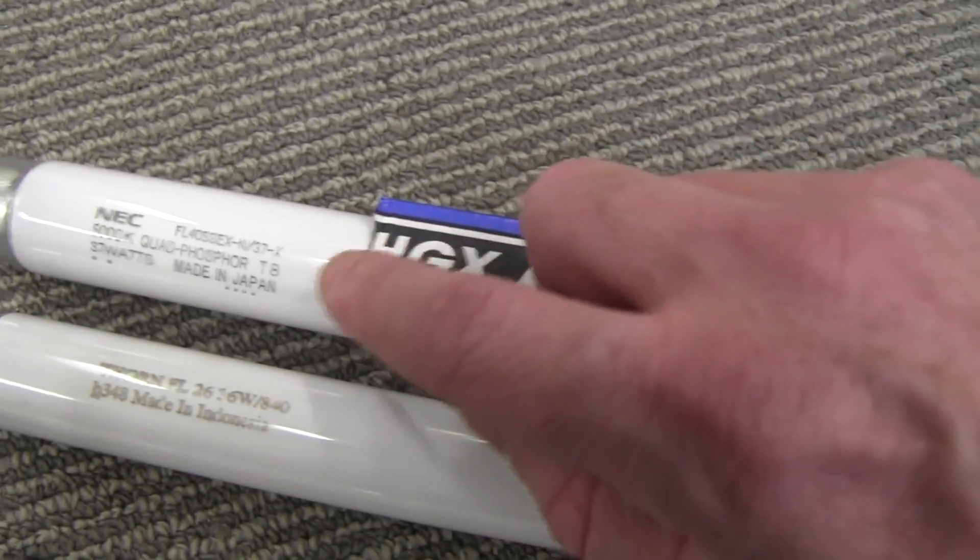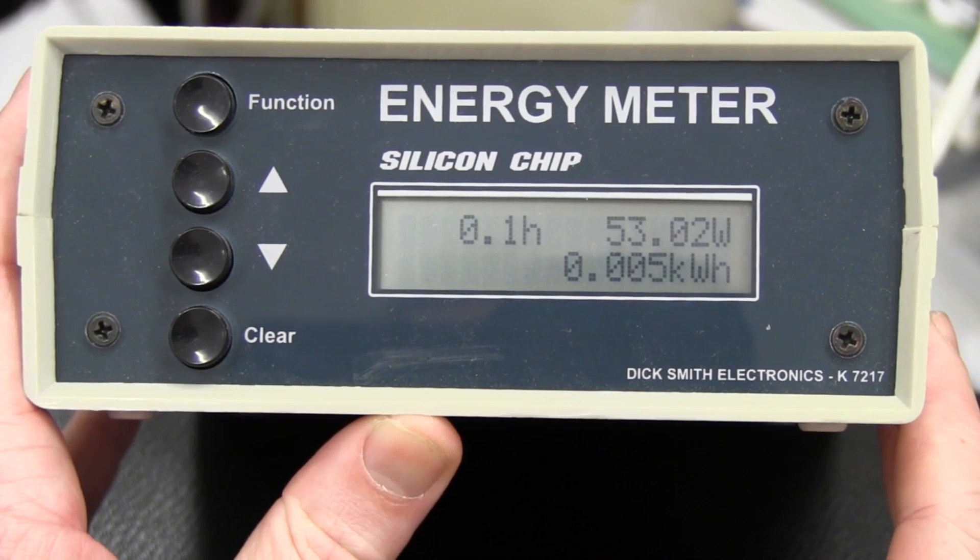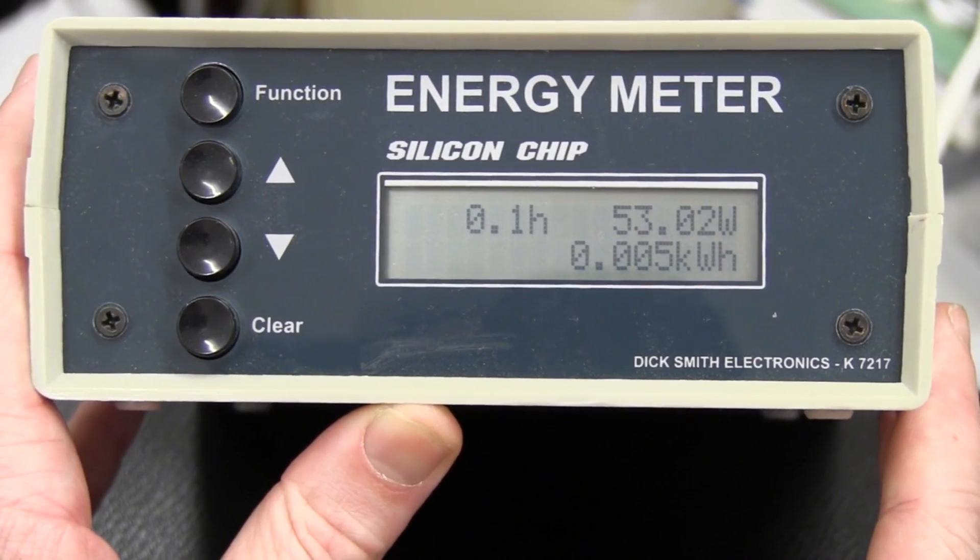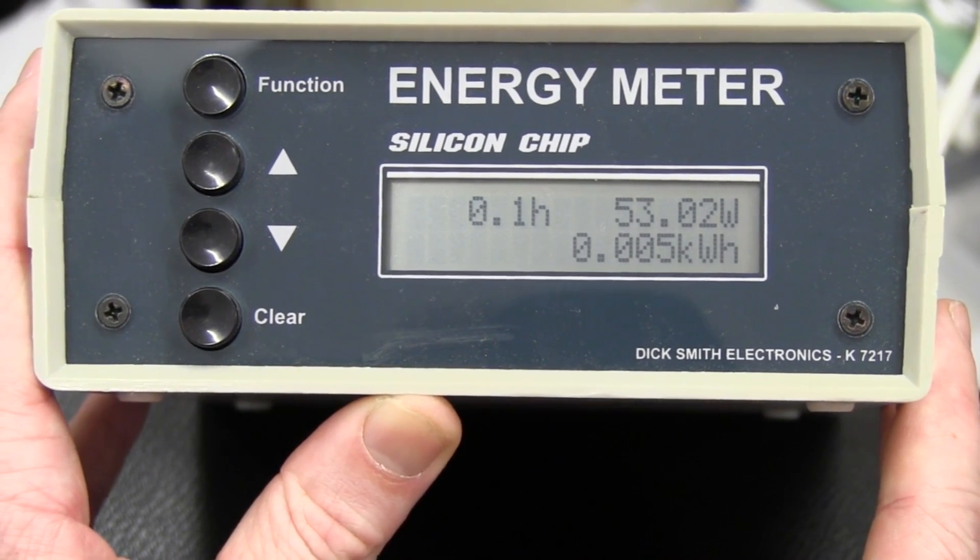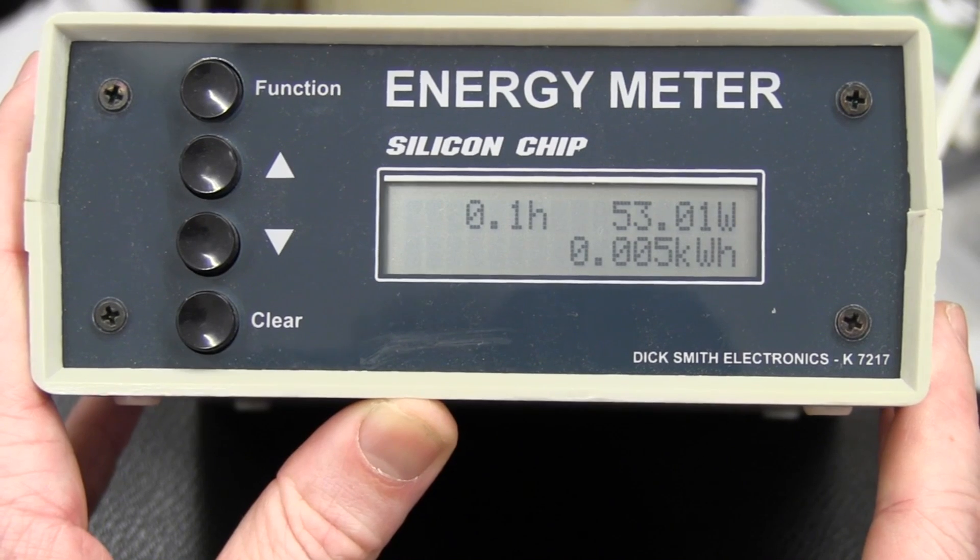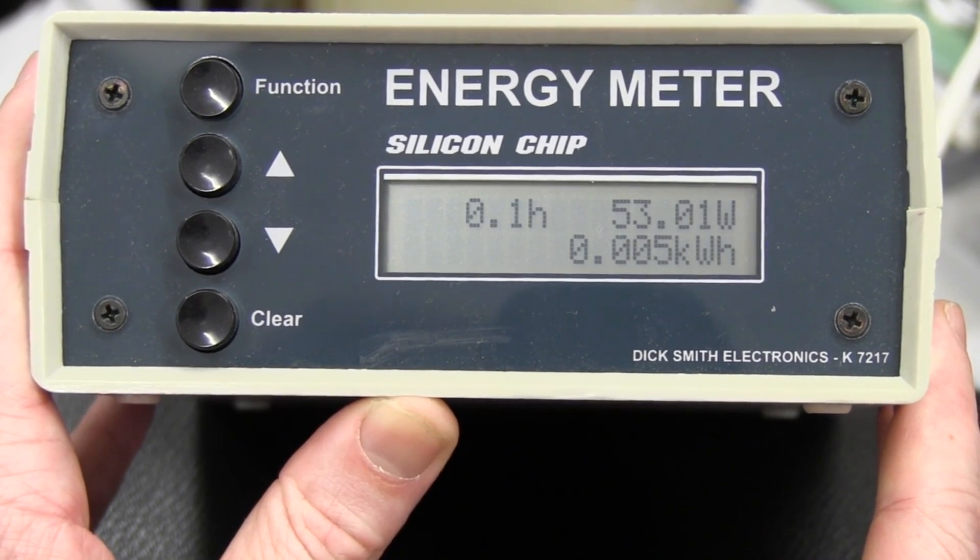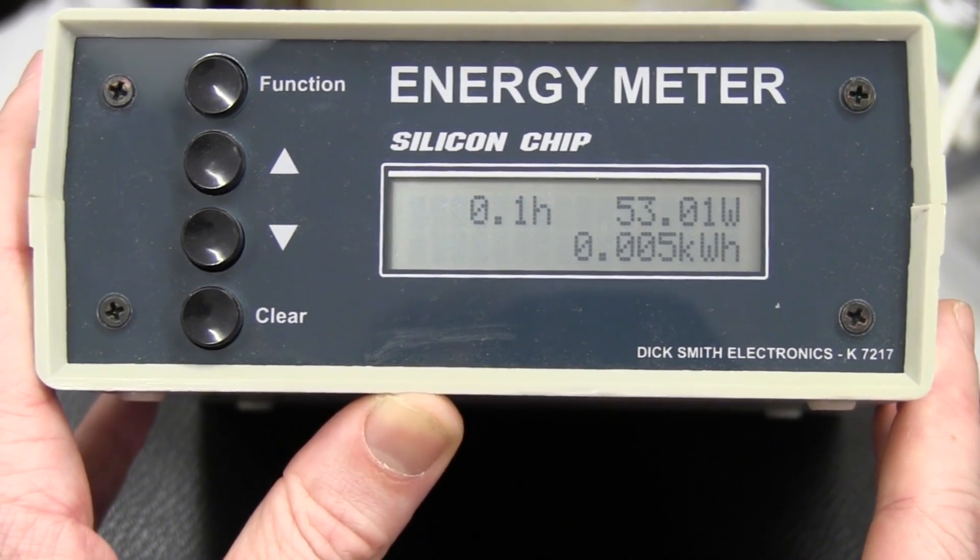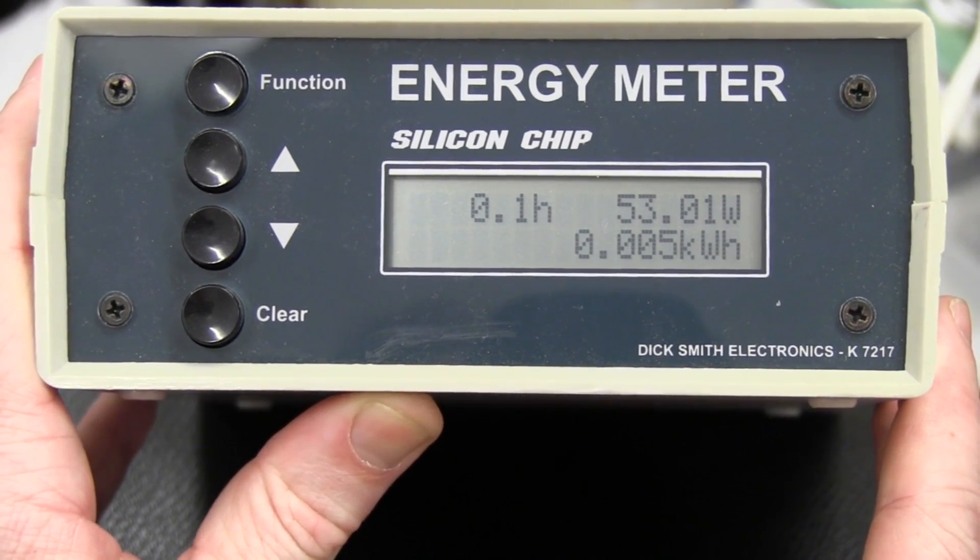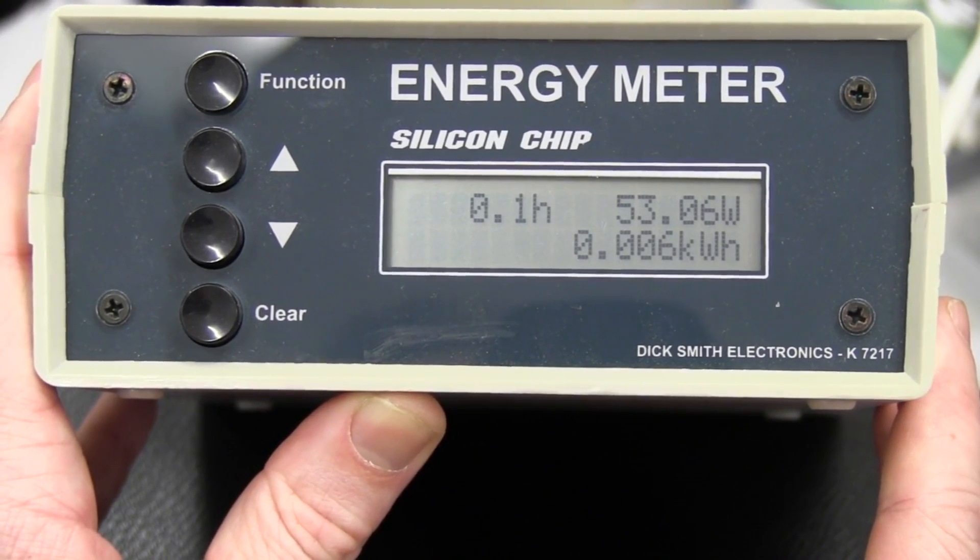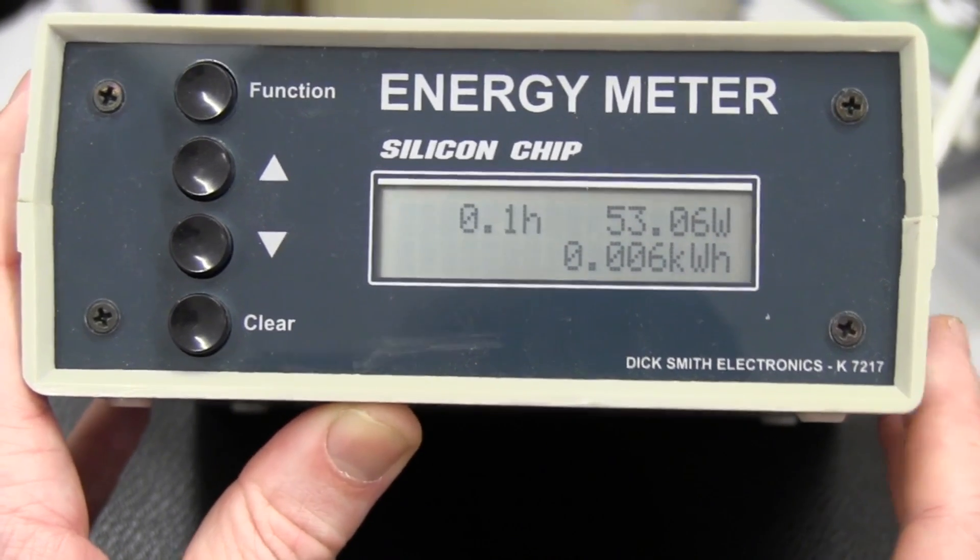And if we plug our energy meter here into the single 36 watt tube luminary, measuring your power consumption around about 53 watts. That's like over 40% more than the 36 watts rated on the tube. And that'll be because of the efficiency, or the lack of efficiency, of the ballast and the power factor correction capacitor.